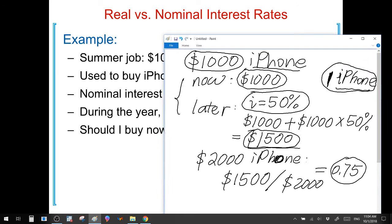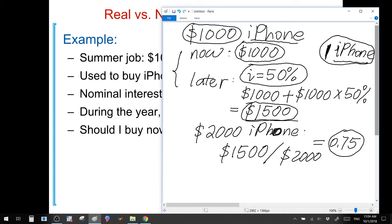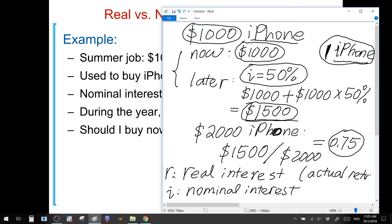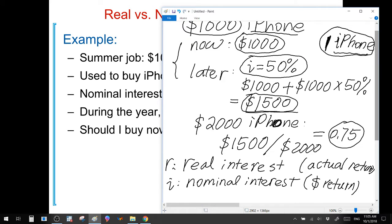So basically, in this example, there is a difference between real interest and nominal interest. We typically use letter R to denote real interest, or the actual return on our saving. And we use letter I to denote nominal interest. Real interest is our actual return measured in terms of iPhones. Nominal interest is our return in terms of dollar units. In our example, the nominal interest on the saving account is 50%.